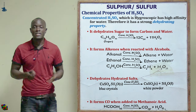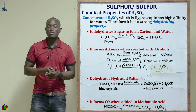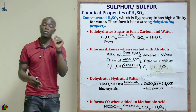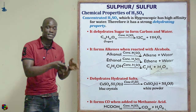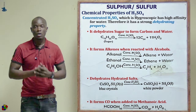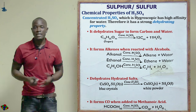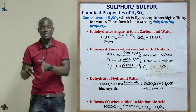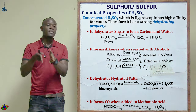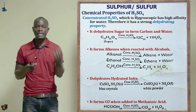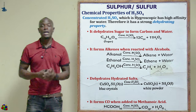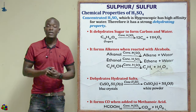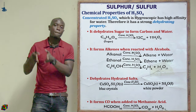Concentrated sulfuric acid also forms carbon dioxide (CO₂) when reacted with metanoic acid (formic acid), as it removes the water vapor to yield CO₂. For letter C, it forms alkenes when reacted with alcohols — it dehydrates the alcohol, removing water to obtain an alkene plus water. For example, reacting ethanol with concentrated H₂SO₄ gives ethene plus water.